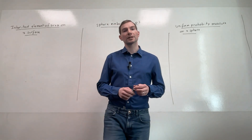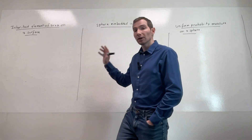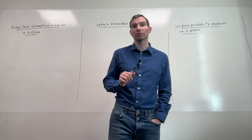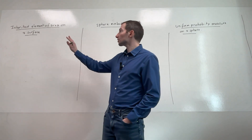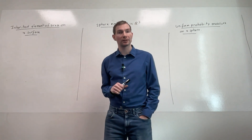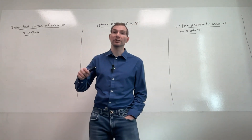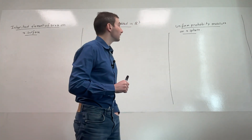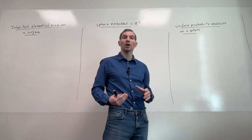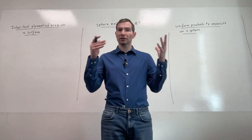Welcome to this new video where we are going to discuss some stuff on the ball. Today we are going to relate to some of the things we've seen in the previous video. We'll see how surface elements can be inherited from an embedding, then apply that to a sphere embedded in R3, and see how that leads to some unintuitive conclusions when it comes to uniform sampling of a point on a sphere.